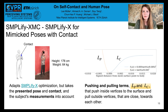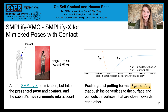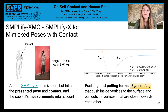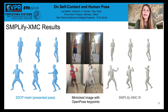To correct these differences, we introduce SMPLify-XMC, which adapts SMPLify-X to our task. SMPLify-X is an optimization-based approach to fit the SMPL-X mesh to 2D keypoints using pose and shape priors. In SMPLify-XMC, we take the presented pose and contact as well as the subject's height and weight into account. We also use contact-preserving energy terms LC and LP, visualized in the graph here. LP pushes intersecting vertices to the surface, and LC pulls outside vertices that are close to each other into contact. Here are two examples: the presented pose in blue, the mimicked image in the center, and the SMPLify-XMC fit in gray.